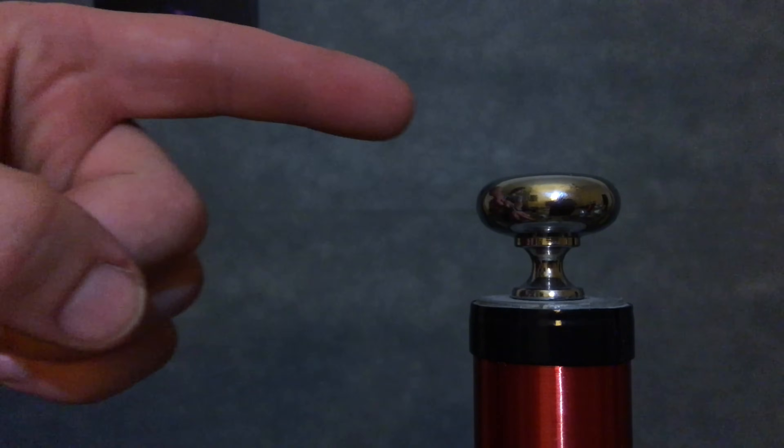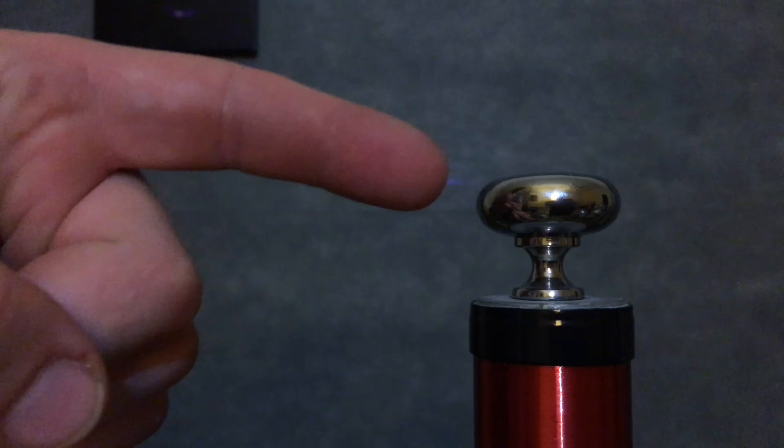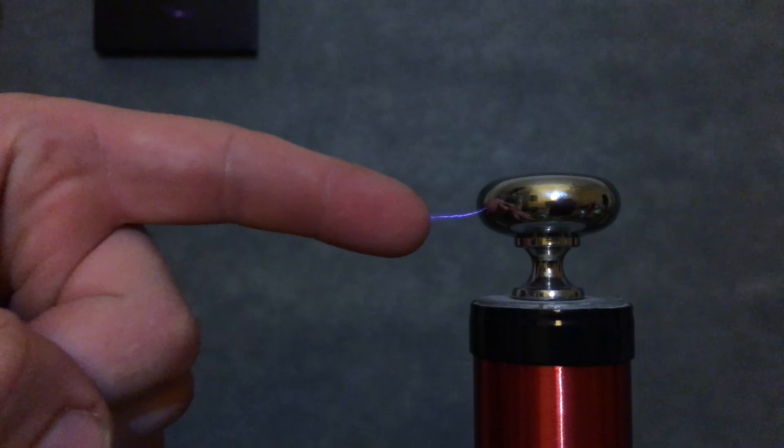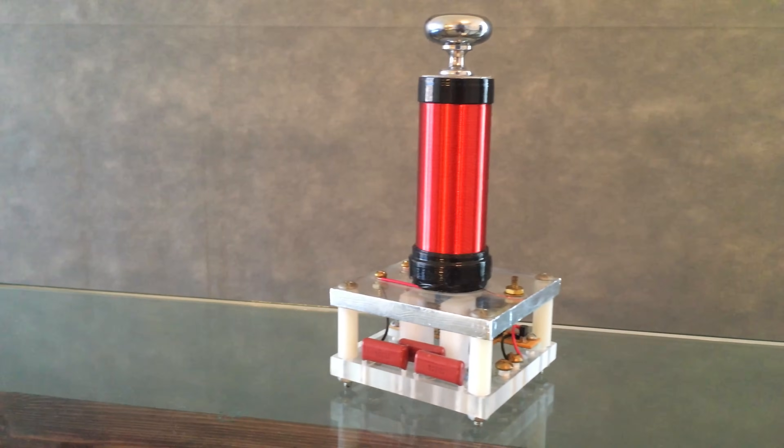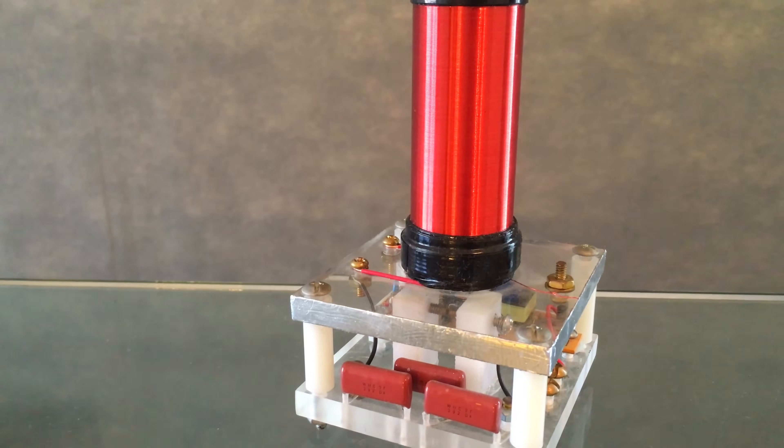These mini coils are awesome and you're going to learn how to build one quite similar to it. This essentially is a micro version of the classical spark gap Tesla coil. I would highly recommend though that you watch our last episode on Tesla coils. It quickly runs you through how coils work and why each and every part is very important. Once you've done that let's get straight to it.